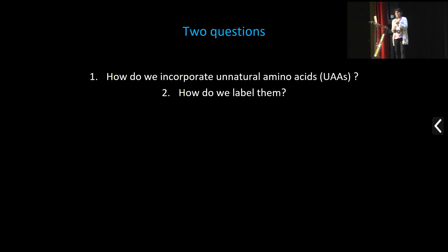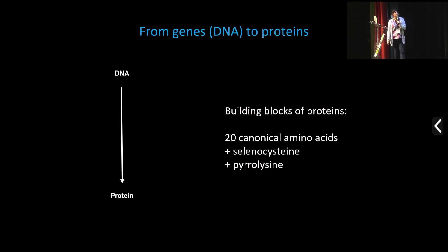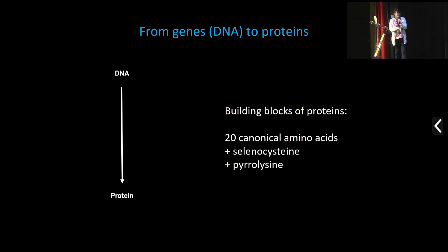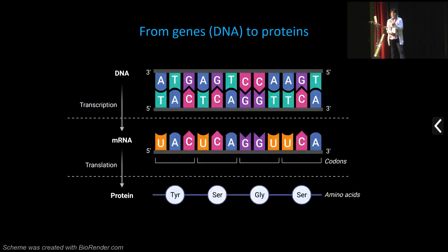There are at least two questions to address: how do we incorporate the unnatural amino acids, and how do we label them? As a brief reminder: proteins are made of amino acids. There are 20 canonical amino acids as building blocks, and we also have selenocysteine and pyrrolysine in some organisms — so basically 22 amino acids present in nature.